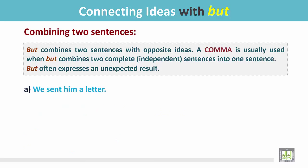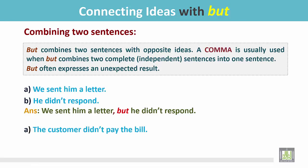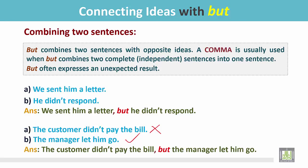'We sent him a letter. He didn't respond.' The first sentence is affirmative and the second is negative, with two different subjects and actions expressing different ideas. Joined with 'but': 'We sent him a letter, but he didn't respond.' Another example: 'The customer didn't pay the bill. The manager let him go.' The first is negative and the second affirmative — supposedly the manager should not let him go, but he did. Answer: 'The customer didn't pay the bill, but the manager let him go.'